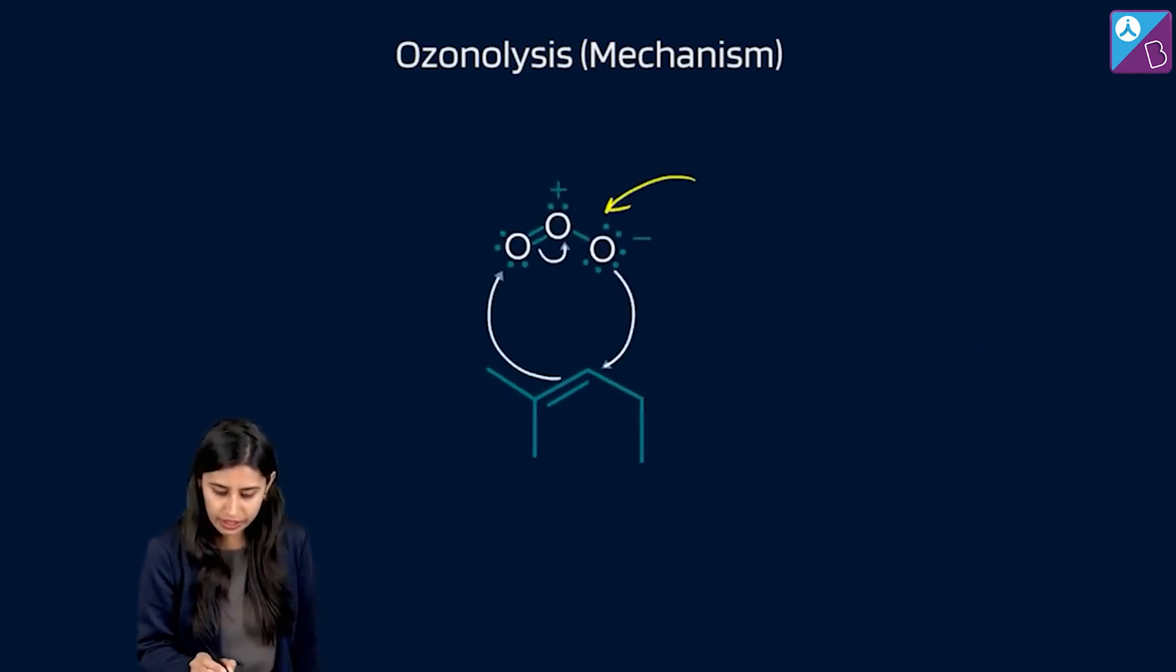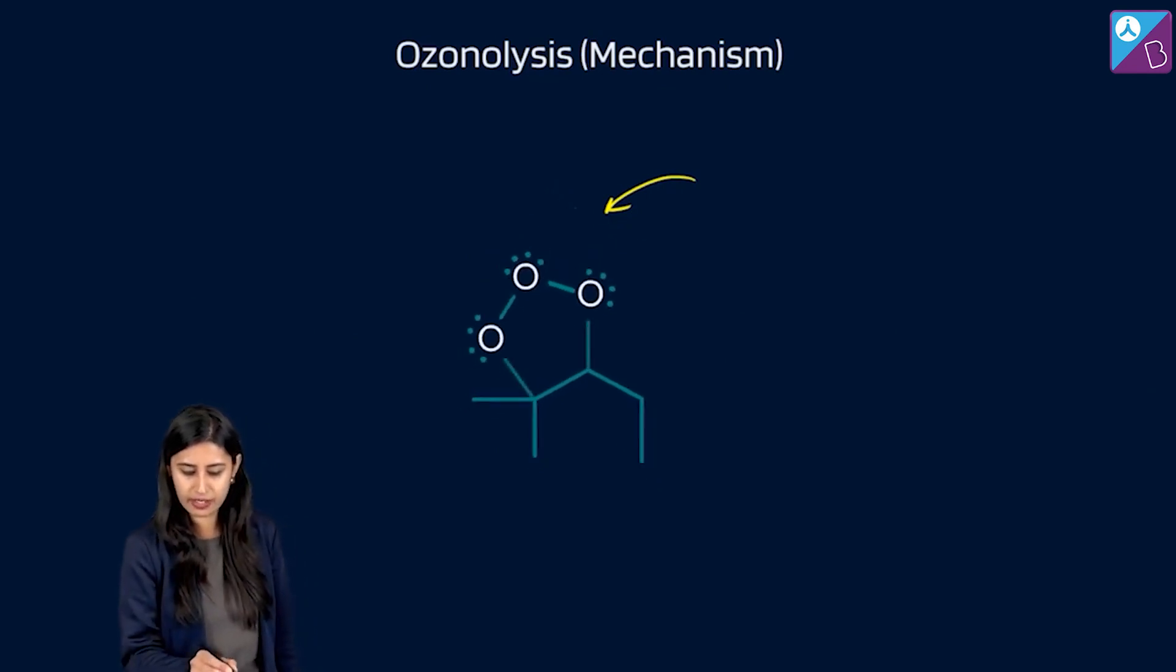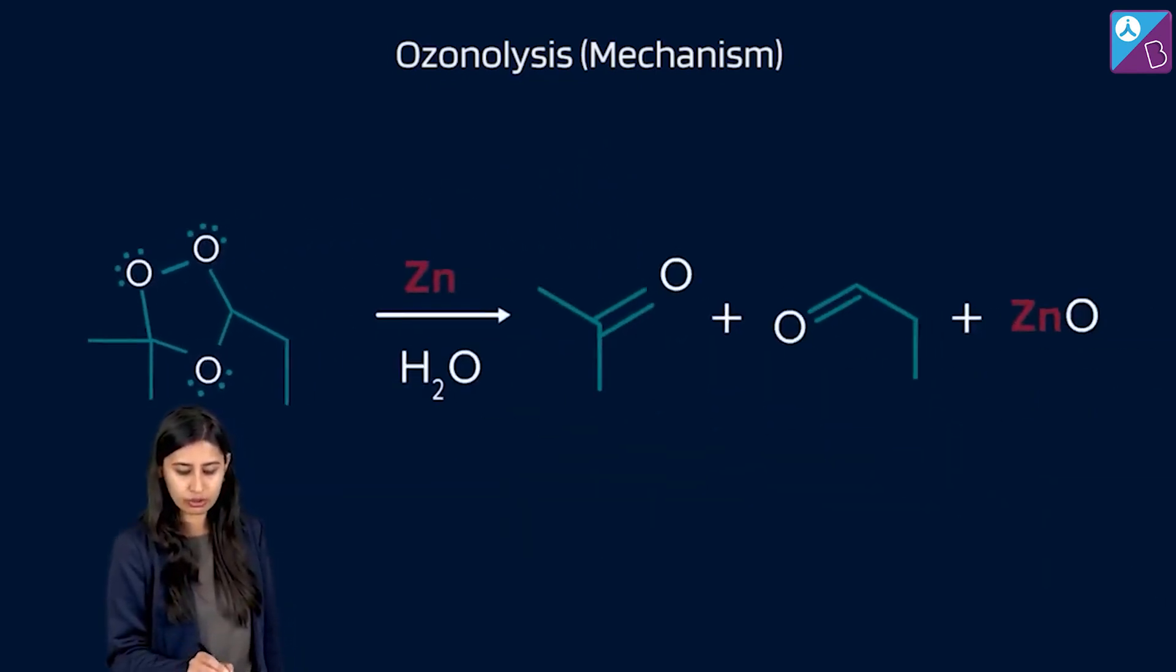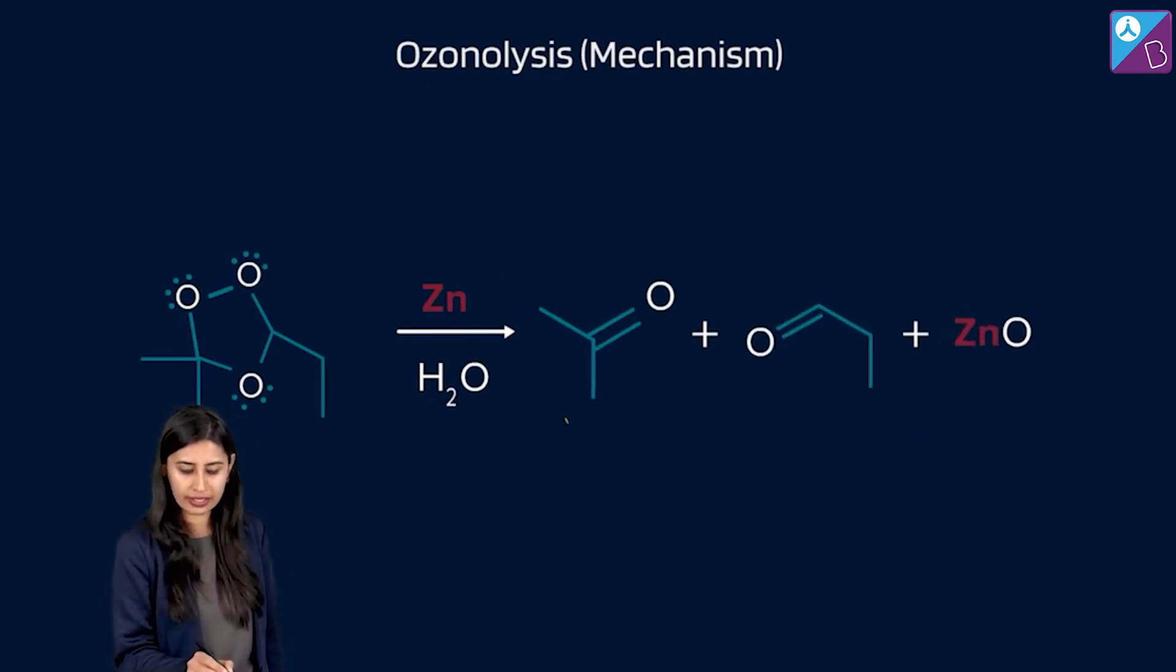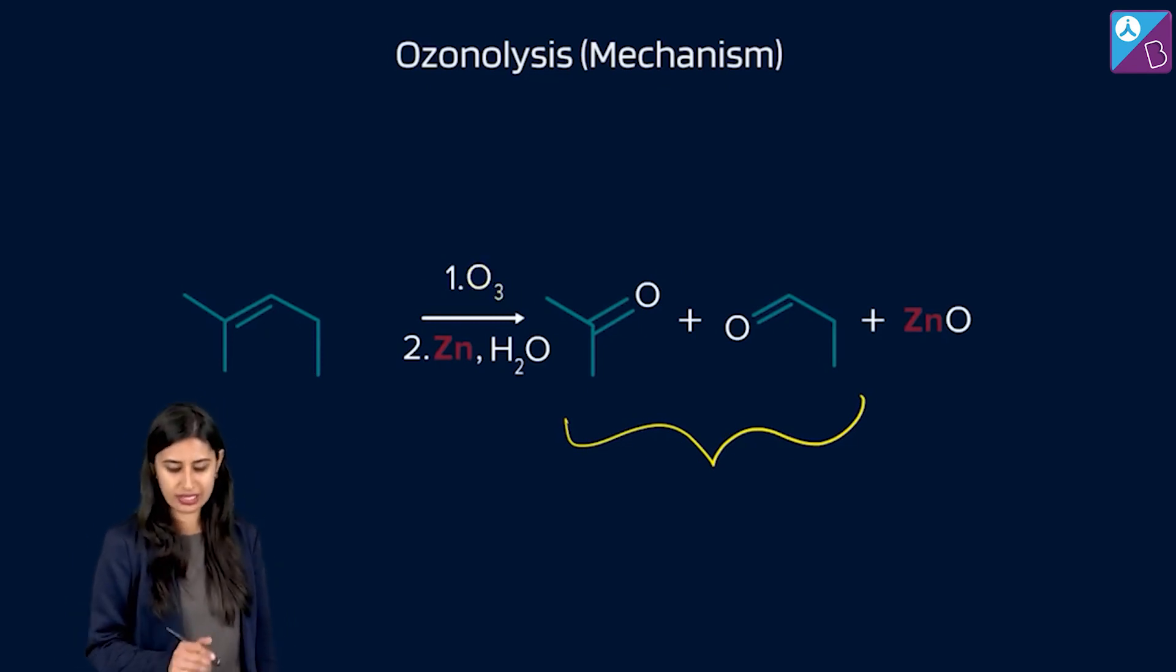Look at this O3 molecule. Look at this. What we are getting is a cyclic membered ring where all the three oxygens are together and then further some rearrangement happens and we get ozonide. And this ozonide now on the addition of zinc in the presence of water are giving us this oxidized products. Check this out.